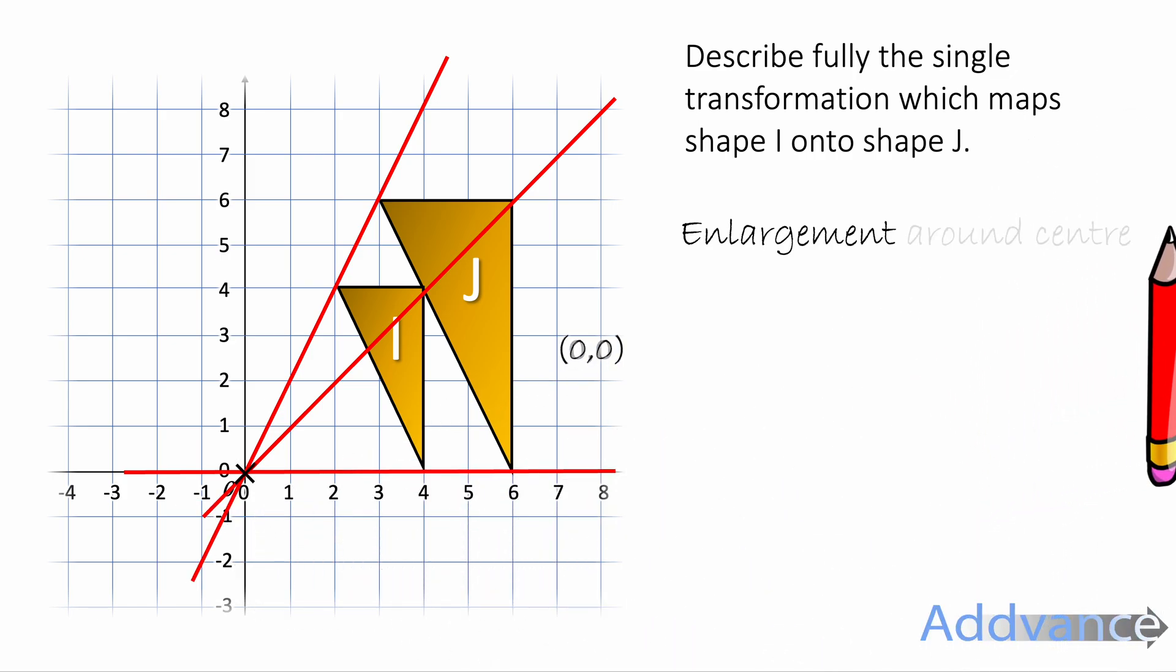So I've drawn with a ruler through the corners of all the two matching triangles. And you should see they overlap, all three red lines overlap at the point 0, 0. That means the centre of enlargement is 0, 0 or the origin.